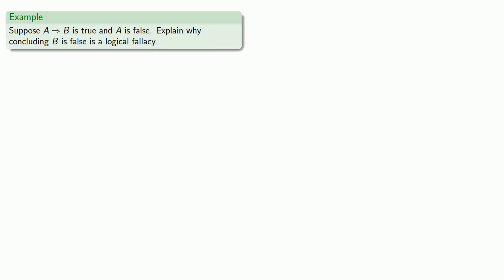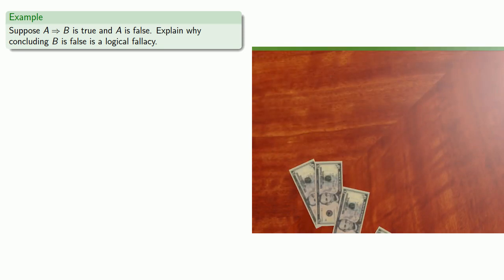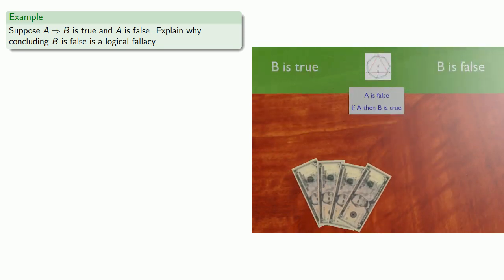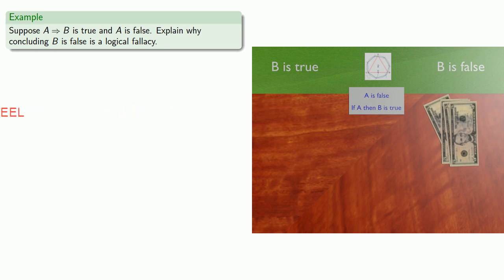For example, suppose the conditional 'if A then B' is true and A is false. Let's explain why concluding B is false is a logical fallacy. In other words, you know the antecedent is false and the conditional is true. So the question is: are you willing to put $20 on the claim that the consequent is false? That would probably be a bad idea. To see why, let's set up a truth table.